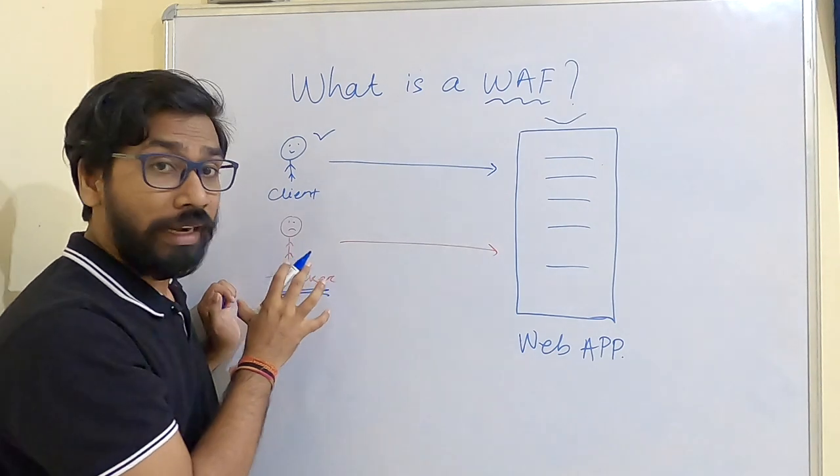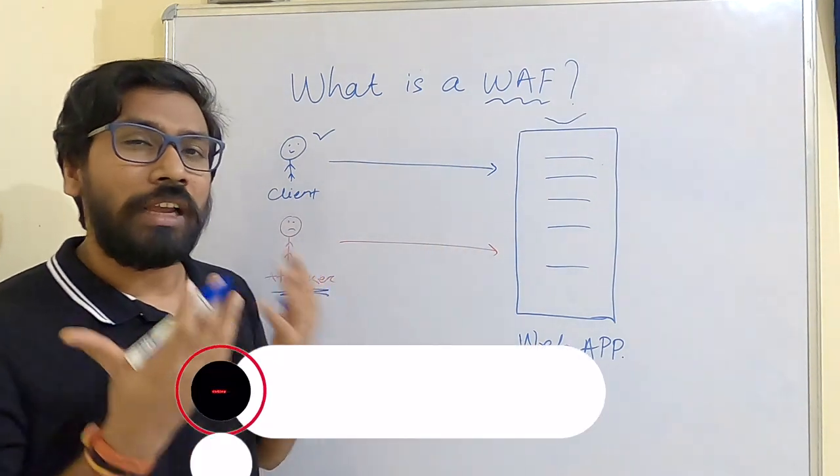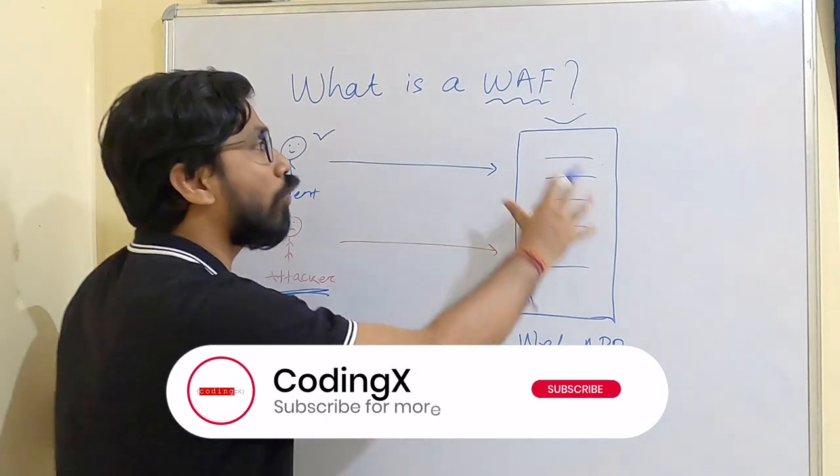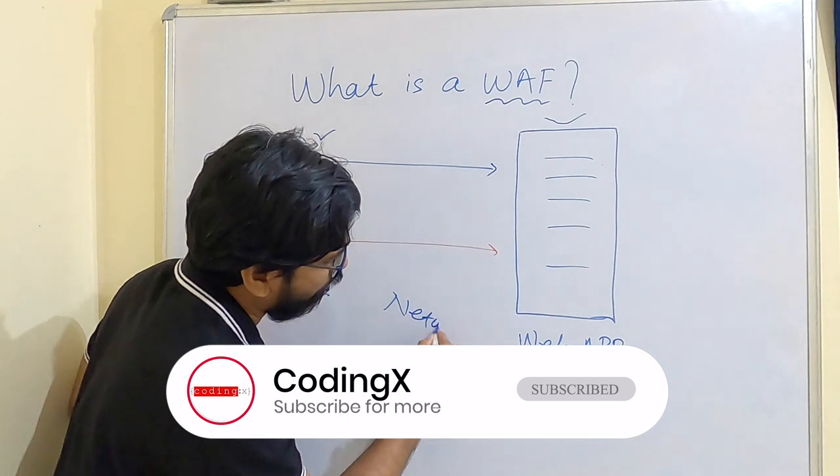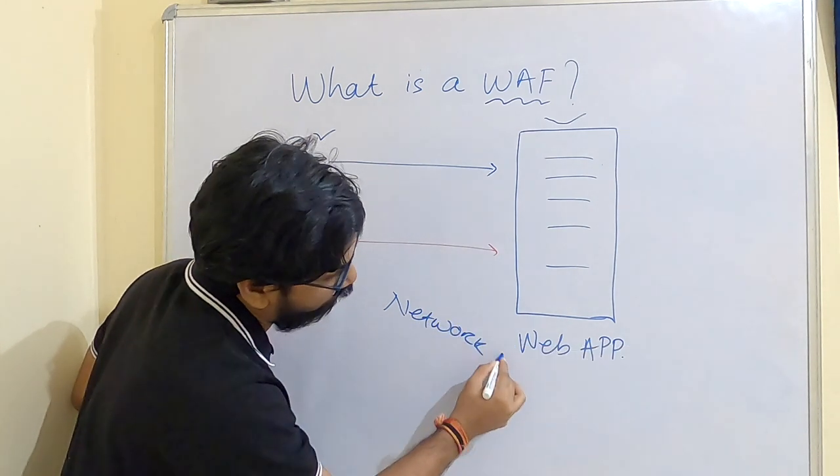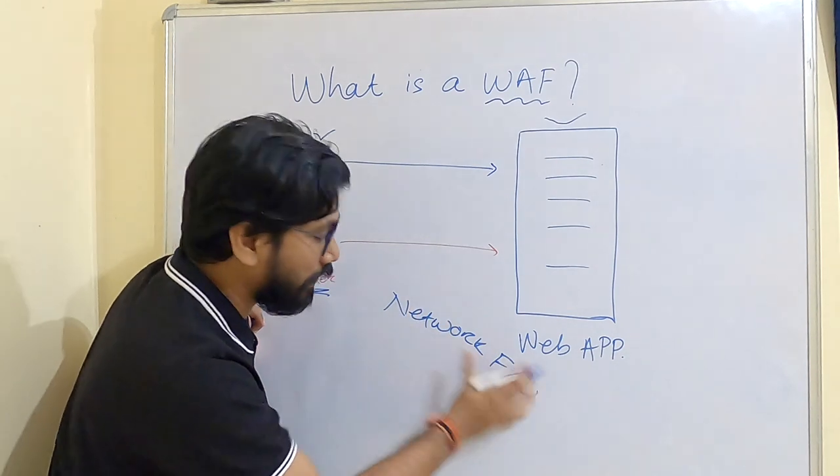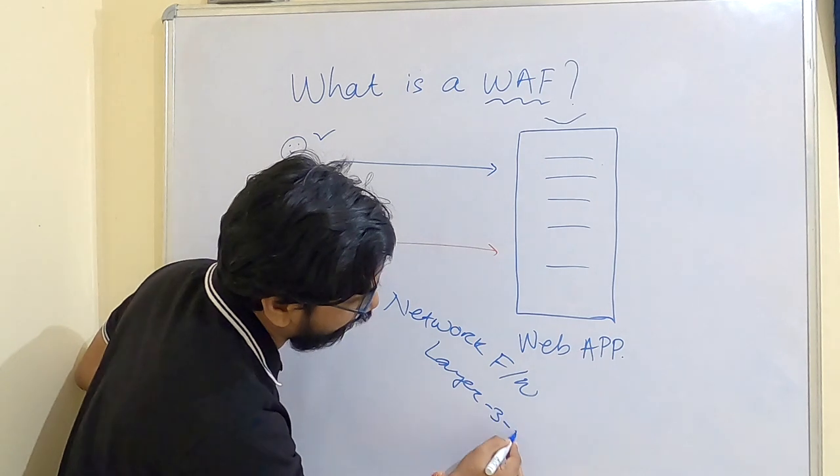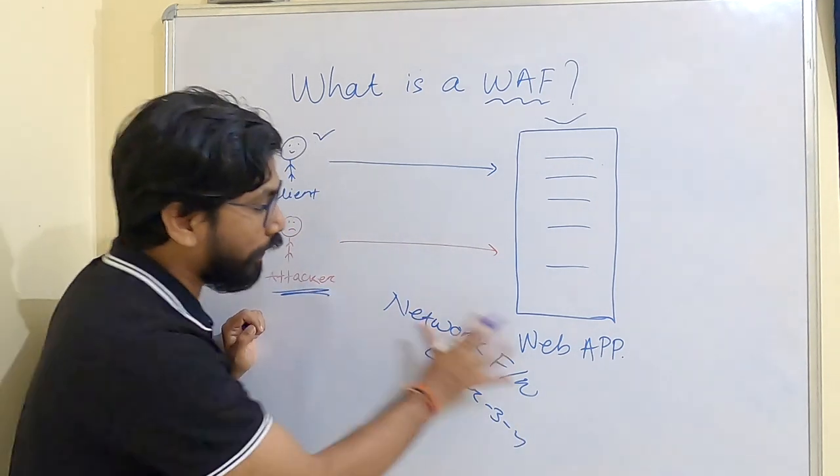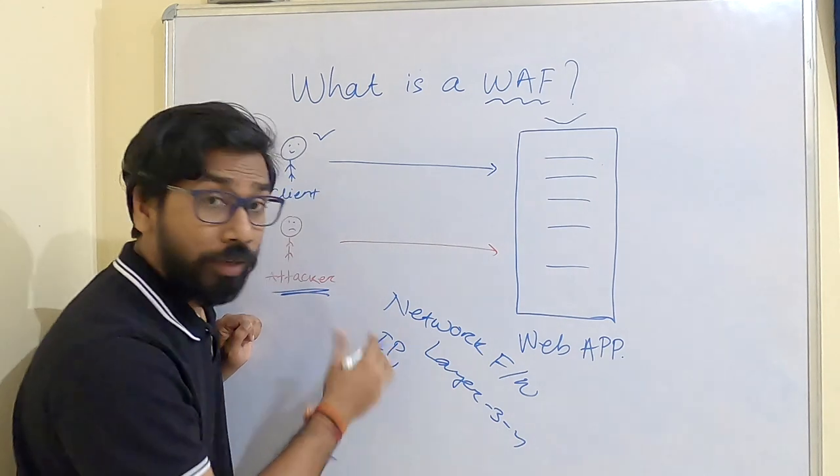A typical and standard way to protect your web application is to deploy network hardware firewall. This operates at layer 3 and layer 4. Through network firewall, we can filter or monitor bad IPs.